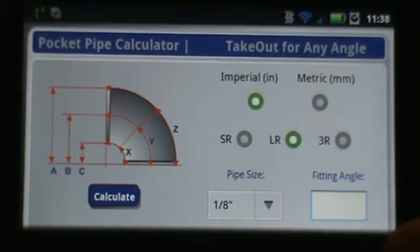If you notice on the right there are five radio buttons. The top two are inches and metric. The calculator will output as inches or millimeters depending on your preference.